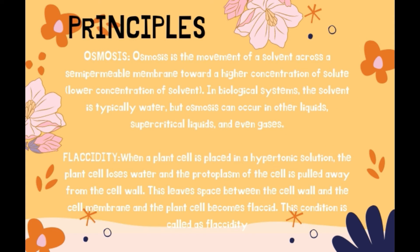The potato strips of this experiment follow the principle of osmosis, which is the net movement of a solvent across a semi-permeable membrane toward a higher concentration of solute. In biological systems the solvent is typically water, but osmosis can occur in liquids, supercritical liquids, or even gases. The term flaccidity refers to when a plant cell is placed in a hypertonic solution — the plant cell loses water and the protoplasm of the cell is pulled away from the cell wall.